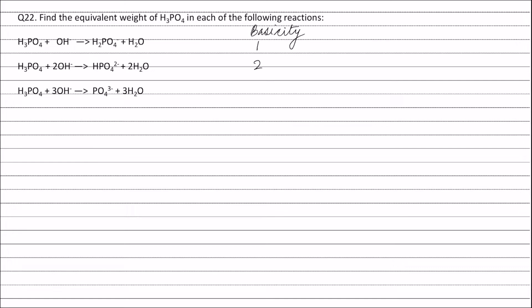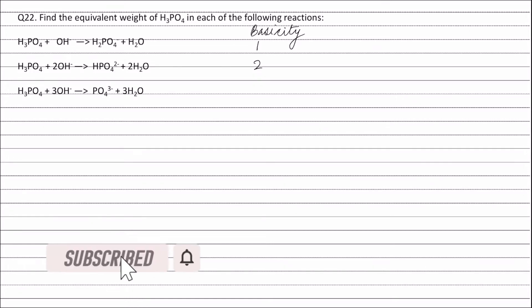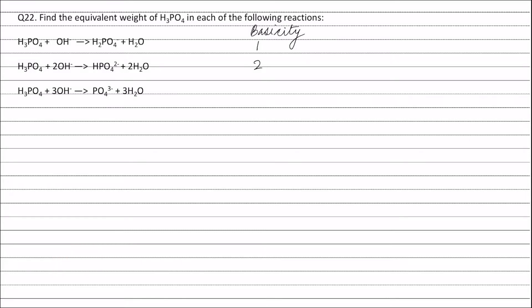In the third reaction, one mole of H3PO4 furnishes three moles of H+ ions, which combine with three moles of OH- ions to form three moles of H2O. Therefore, the basicity of H3PO4 in the third reaction is three.